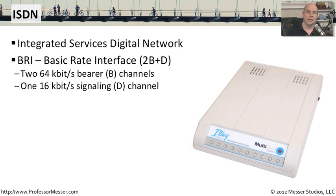There's also a D channel on a BRI connection. The D channel doesn't carry normal data — it's a completely separate channel running at only 16 kilobits per second. It's the channel used for signaling, for making sure the connection is brought up and torn down at the end. There's a completely separate D channel used just for that purpose.